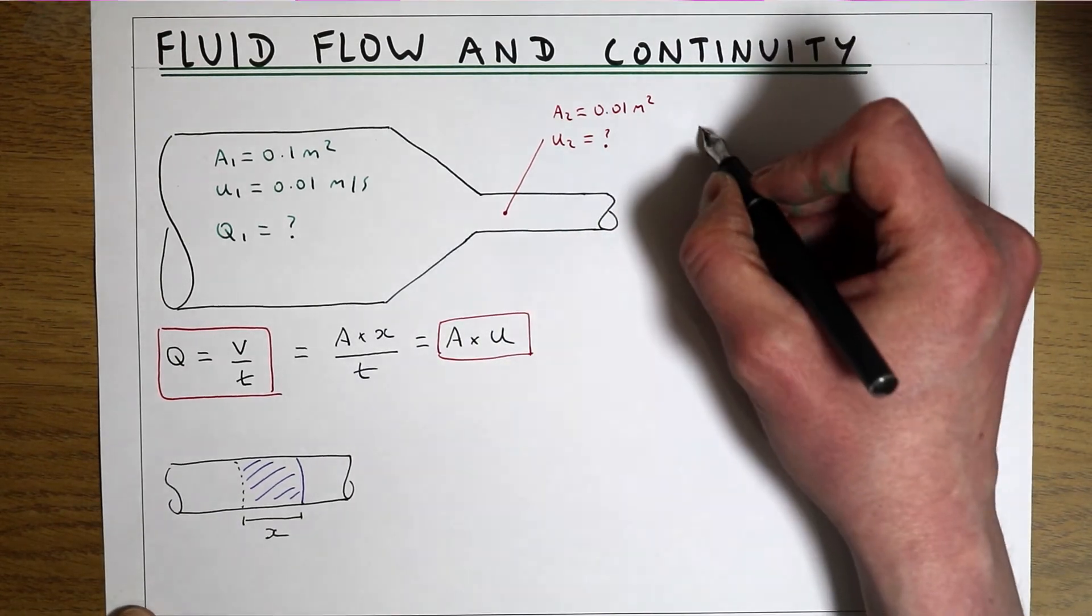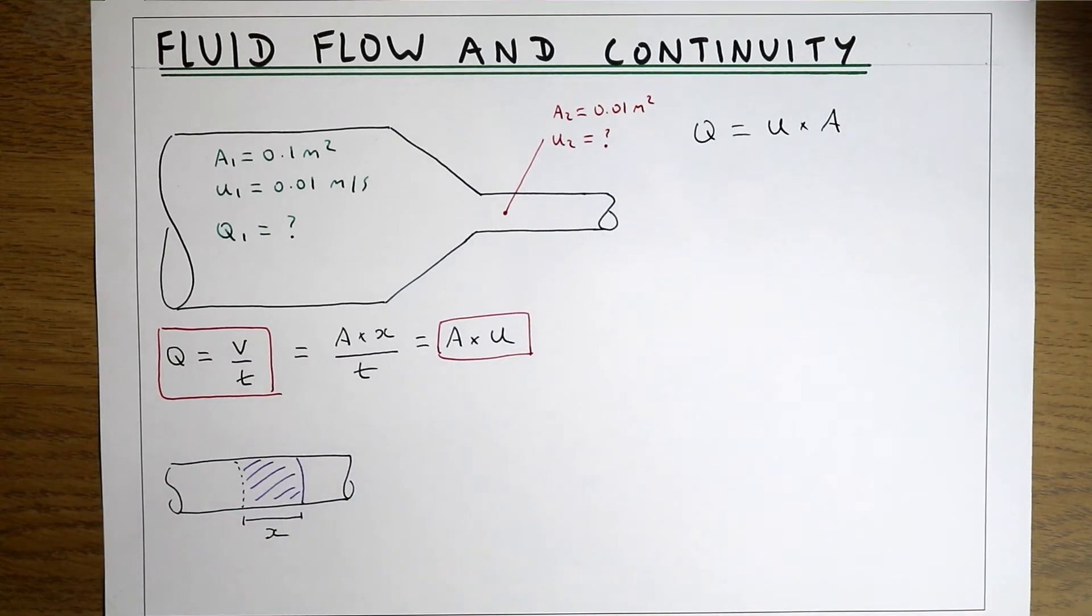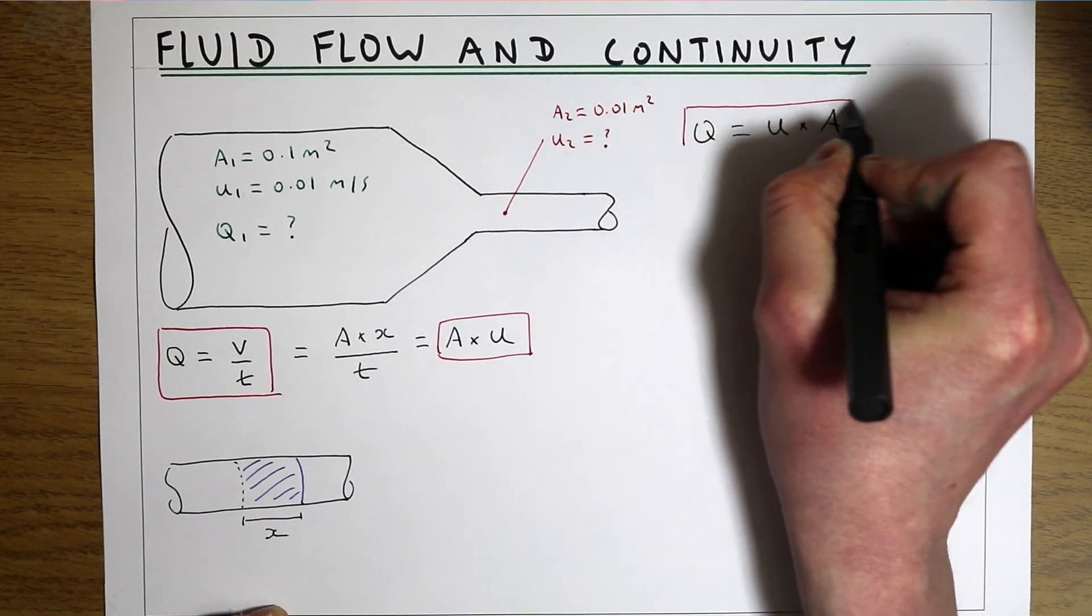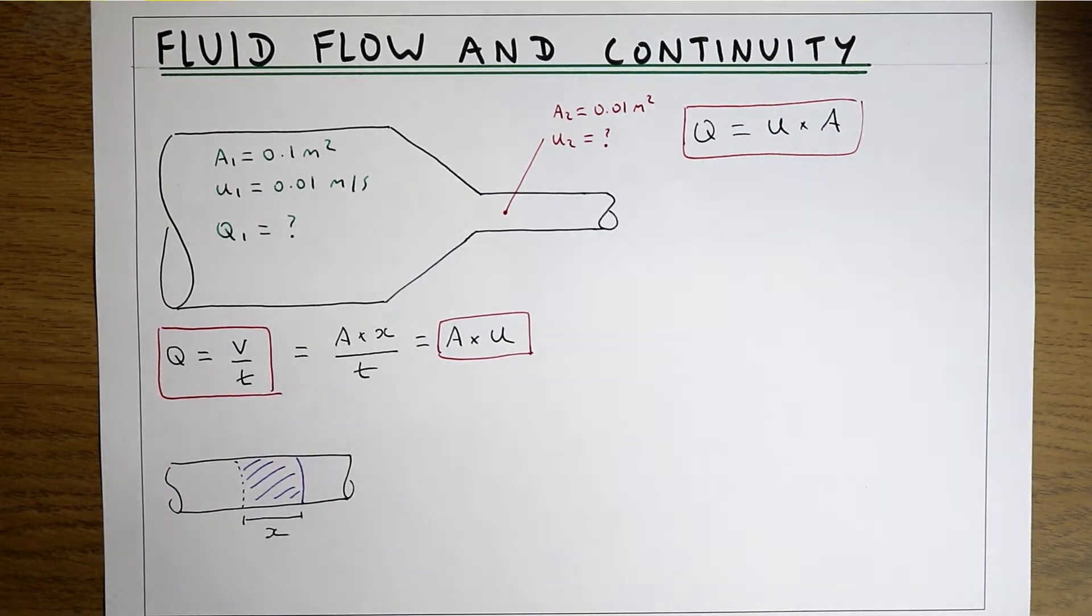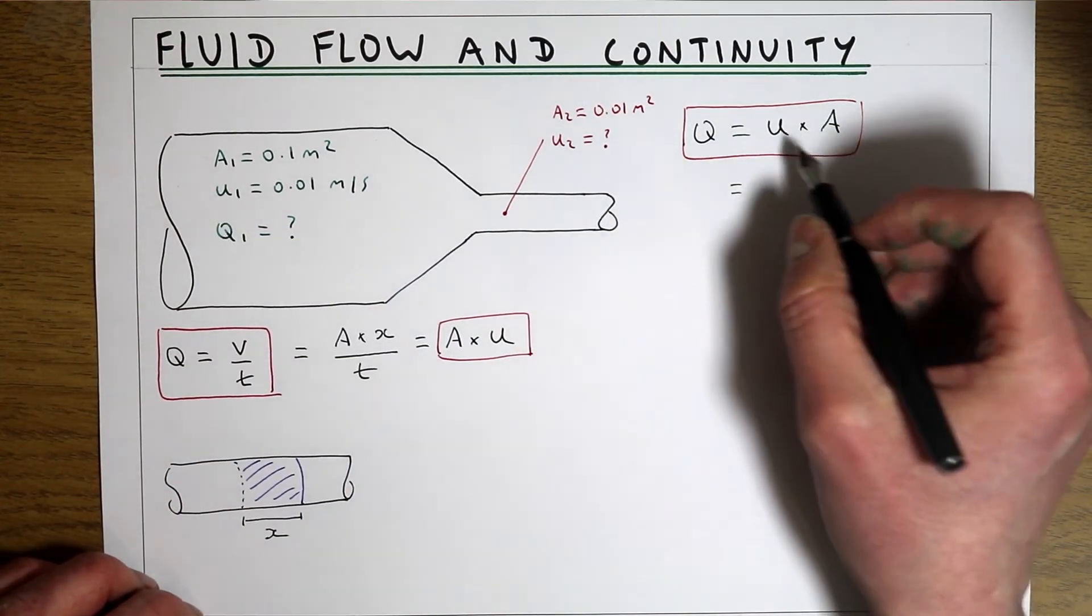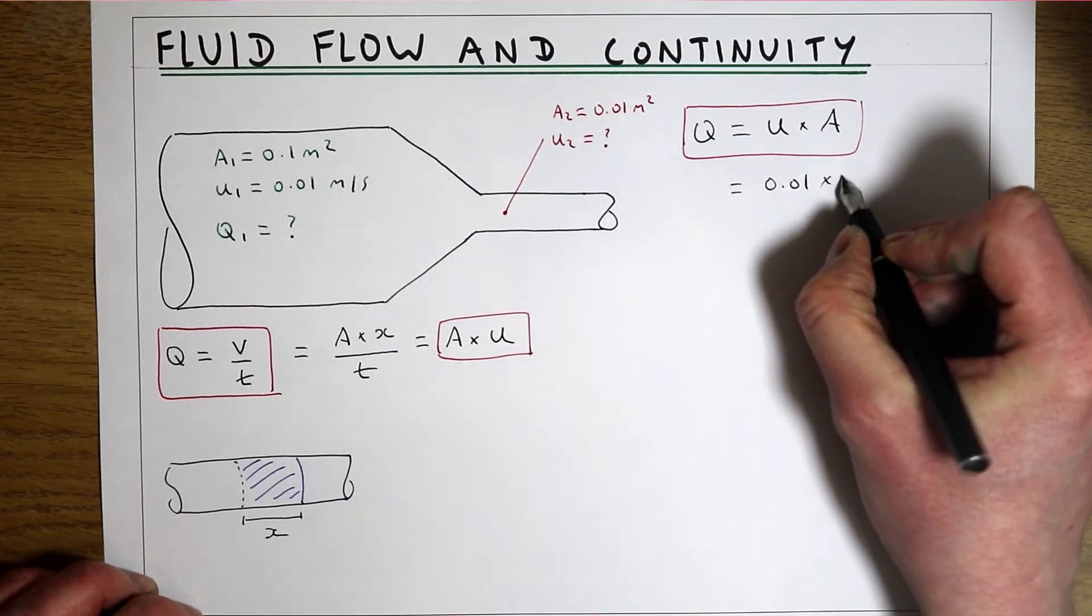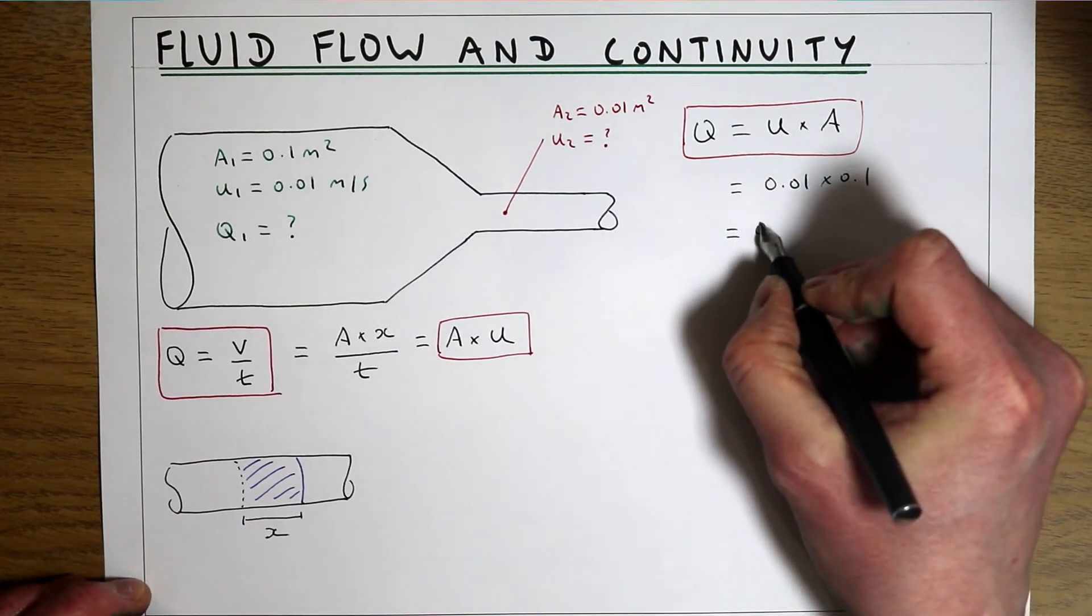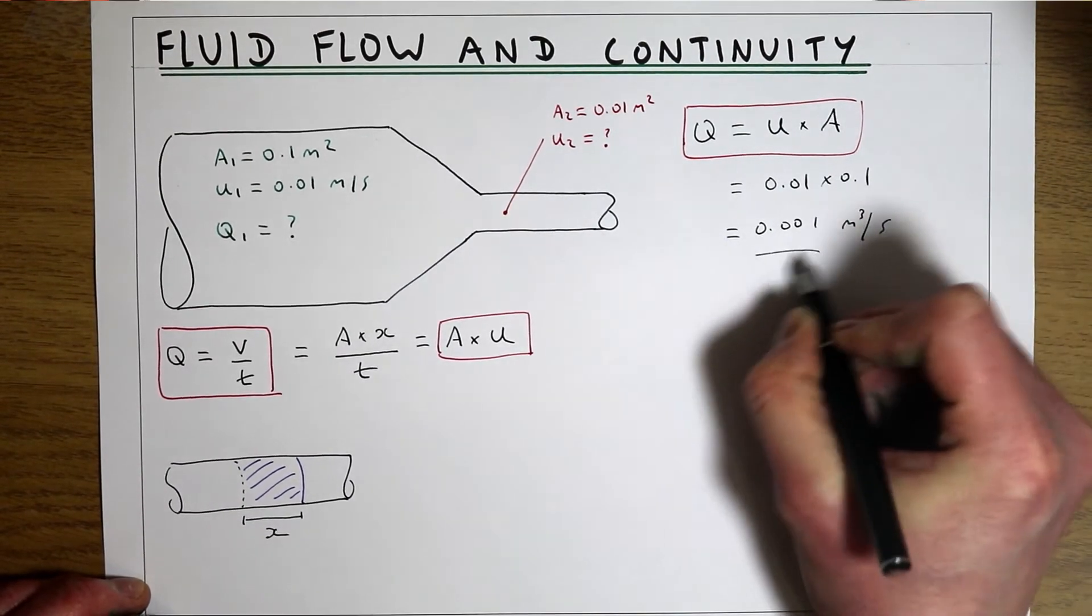Now we know that Q equals u times A, we can do the first part of this calculation because we know at point number 1 the velocity is 0.01 m/s and the area is 0.1 m², so the flow at point 1 is 0.001 m³/s.